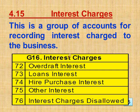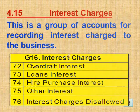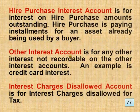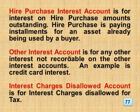Section 4.15 Interest Charges, Group 16. This is a group of accounts for recording interest charged to the business. This includes overdraft interest, loans interest, hire purchase interest, other interest, plus interest charges disallowed. Overdraft interest account covers interest charged on a bank overdraft — an overdraft is a short-period bank borrowing allowed to current account holders. Loans interest account is for interest paid on a loan. Hire purchase interest account covers interest on hire purchase amounts outstanding — hire purchase is paying installments for an asset already being used by a buyer. Other interest account covers any other interest not recordable on specific accounts — an example is credit card interest. Interest charges disallowed account covers interest charges disallowed for tax.